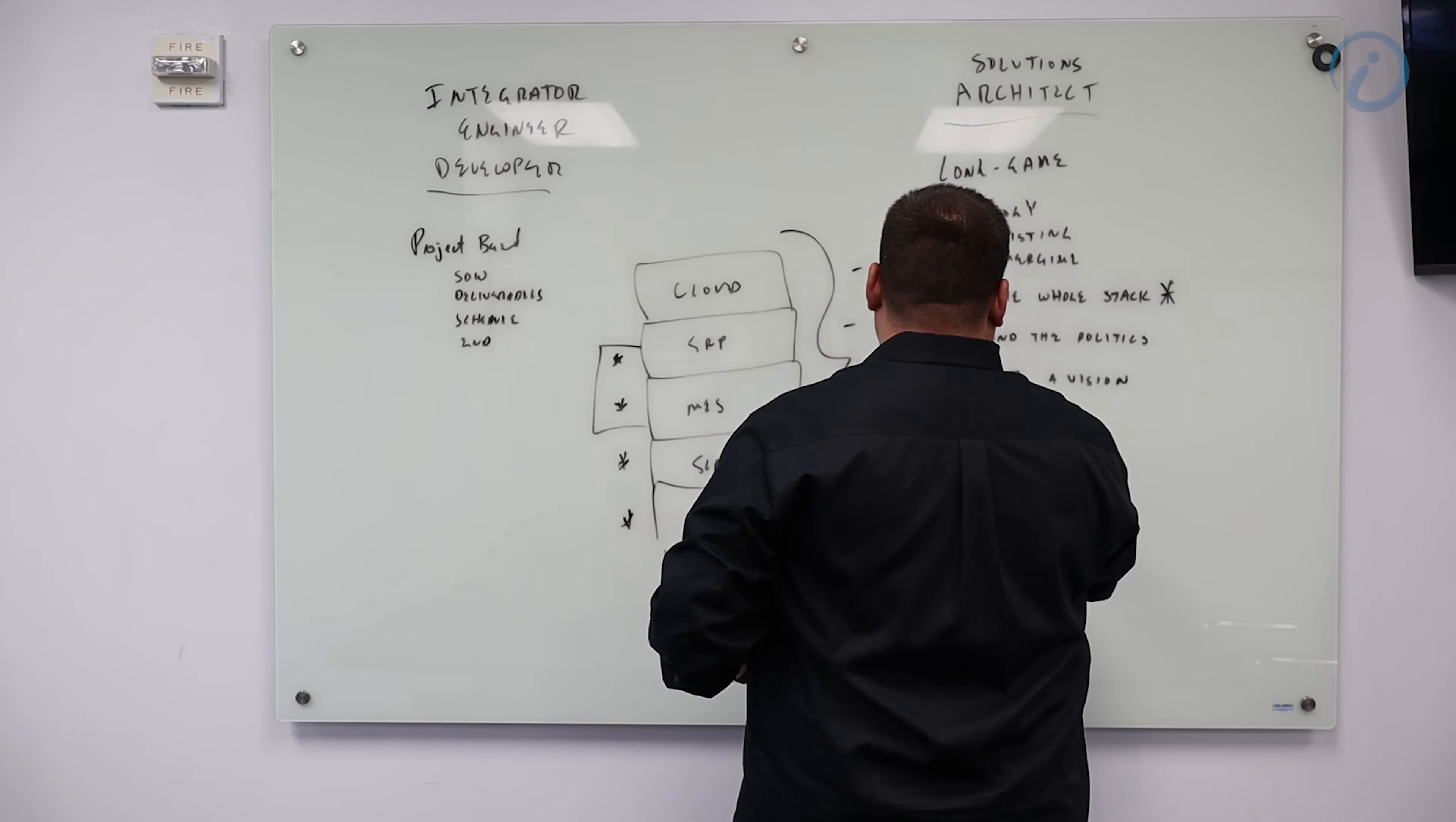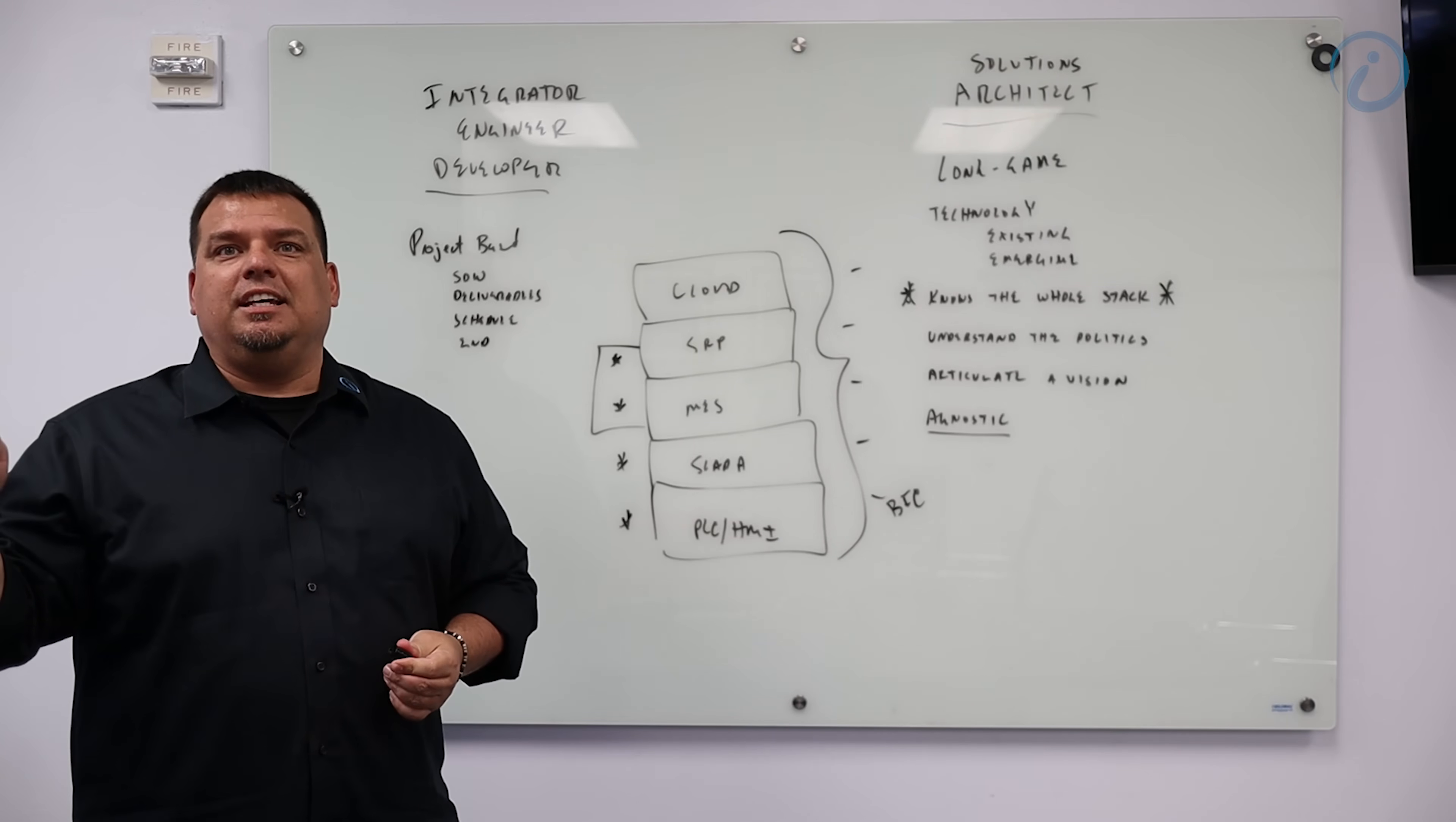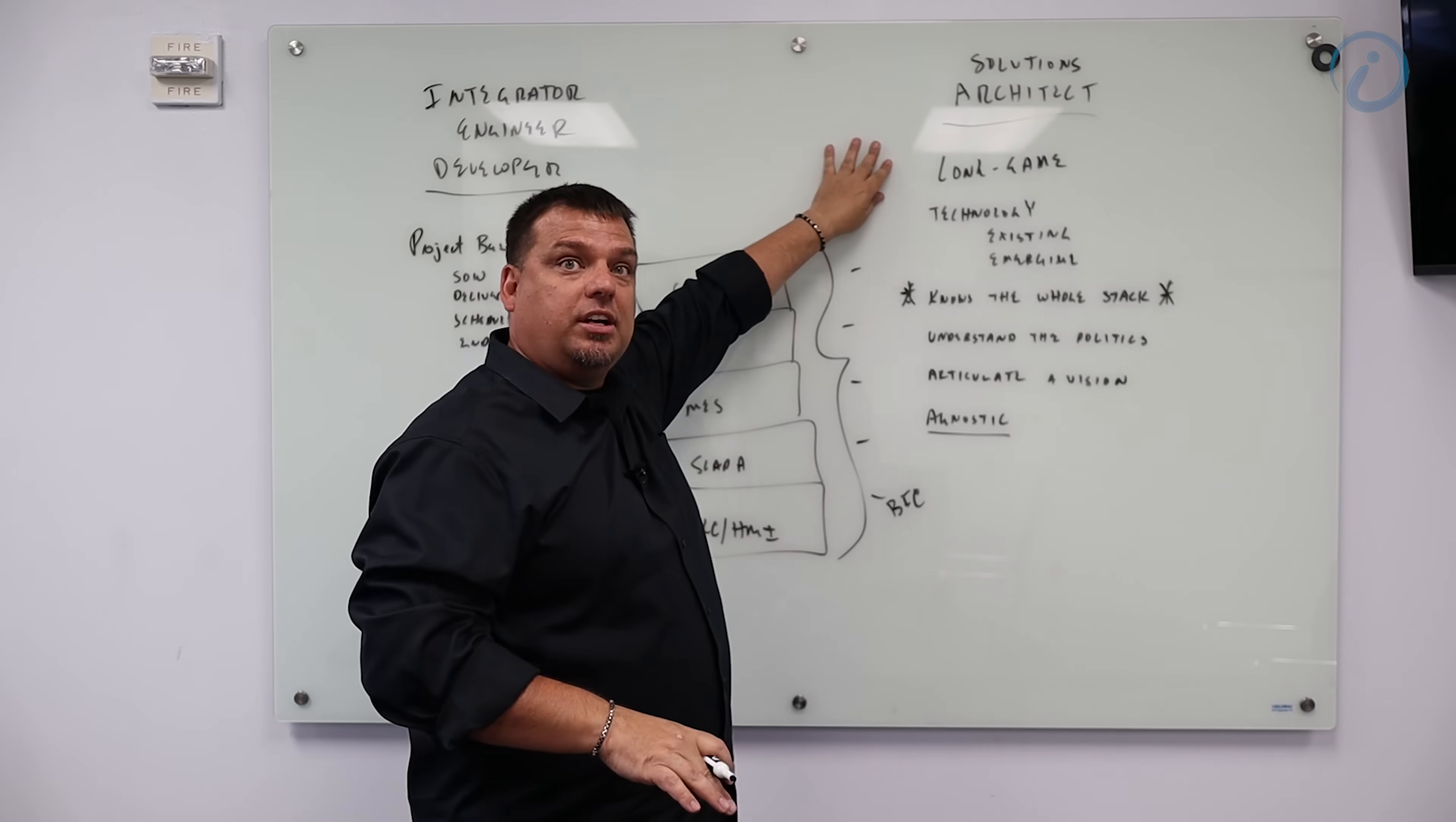Here's the other thing a solutions architect is. They are agnostic. And this is the most important thing. A solutions architect is not married to any one technology. They are not married to any one piece of hardware. They're not married to any one solution. They are married to best in class. And best in class changes in and out. But best in class is based on the technology. And the solutions architect is committed to the long game and is committed to evolving organizations as the technology evolves. That's what solutions architects do.